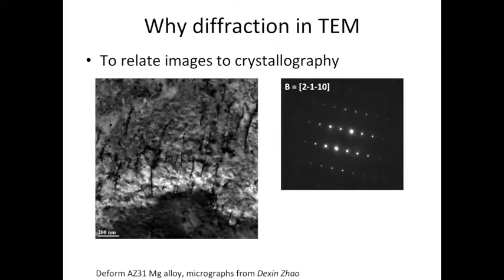Let's start by looking at why doing diffraction inside TEM. One main advantage is that we are able to relate what we see in the micrographs to the crystallography. In the example shown in the slide here, my student Devin Zhao took a micrograph of the deformed AZ31 magnesium alloy. You see some dark lines, those are dislocations. On the right, that's the corresponding diffraction pattern of the micrograph.